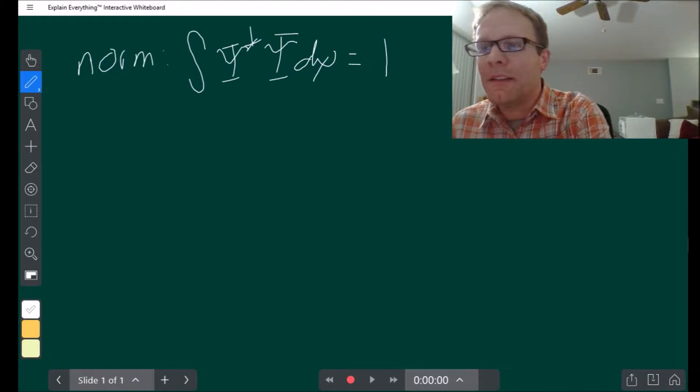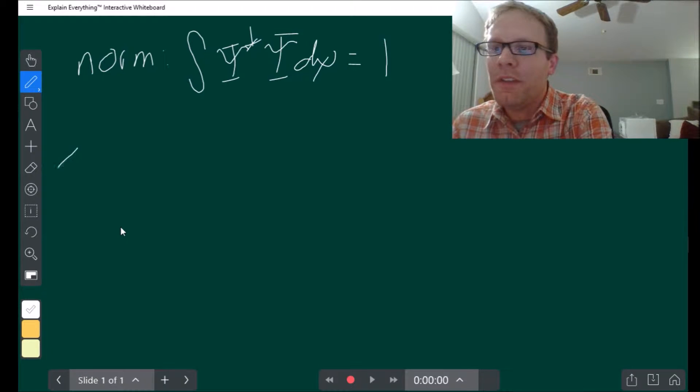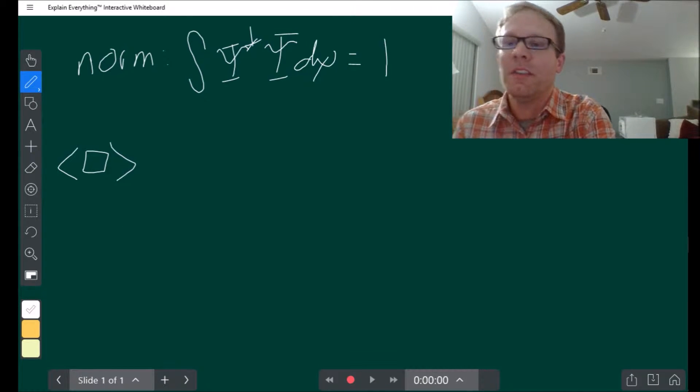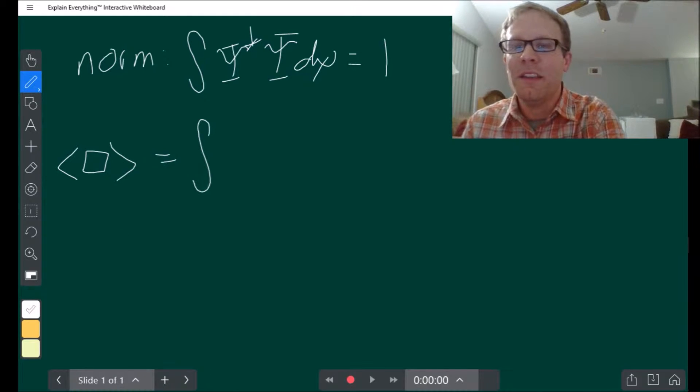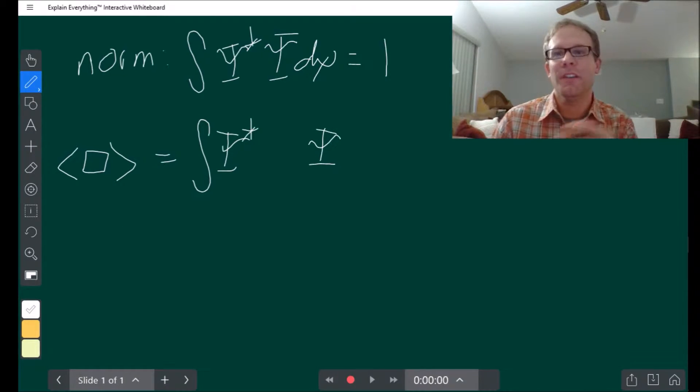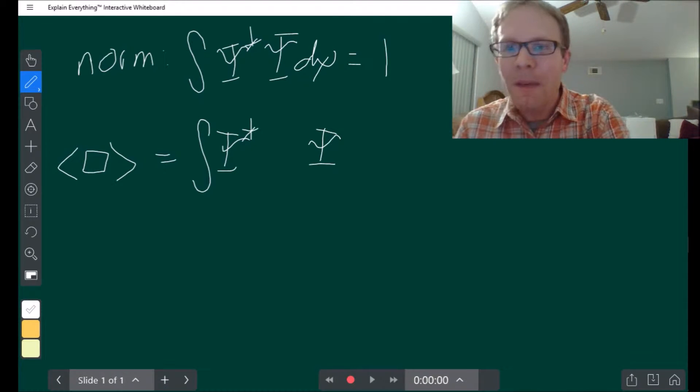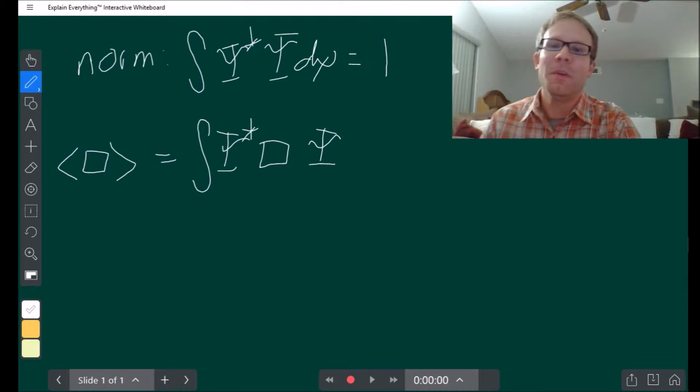The way you calculate an expectation value is whatever the thing is that you're looking to calculate expectation of. The way you calculate it is you take the integral of psi star and psi. Psi is the thing we're calculating - the red part is the real part and the green part is the imaginary part. So psi is red plus i times green, psi star is red minus i times green. Basically what you do is you put whatever the observable is in between them.